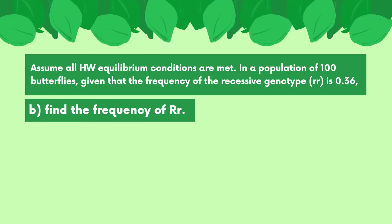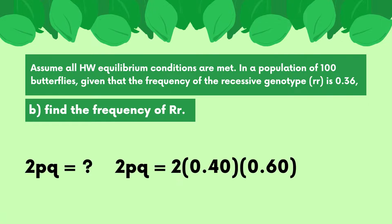For the next part, we need to find the frequency of the Rr genotype, which is the heterozygous genotype. That is equal to 2pq. All we have to do is plug in the values for p and q, and we find that 2pq = 0.48.